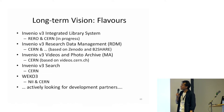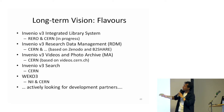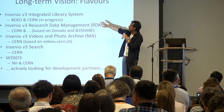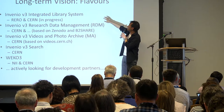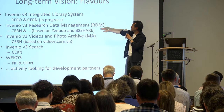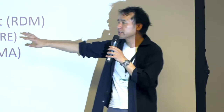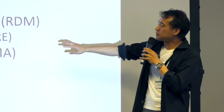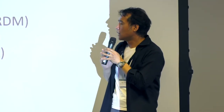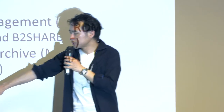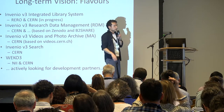Similar to Fedora, Invenio has a sort of packaged repository concept. In a longer-term vision, there will be packages such as a library system package — we call these 'flavors' — or a research data management system. This will be a combination with Zenodo and B2Share. Invenio also has a video-centric package. Our own repository system development, named WEKO 3, is also one of these flavors.